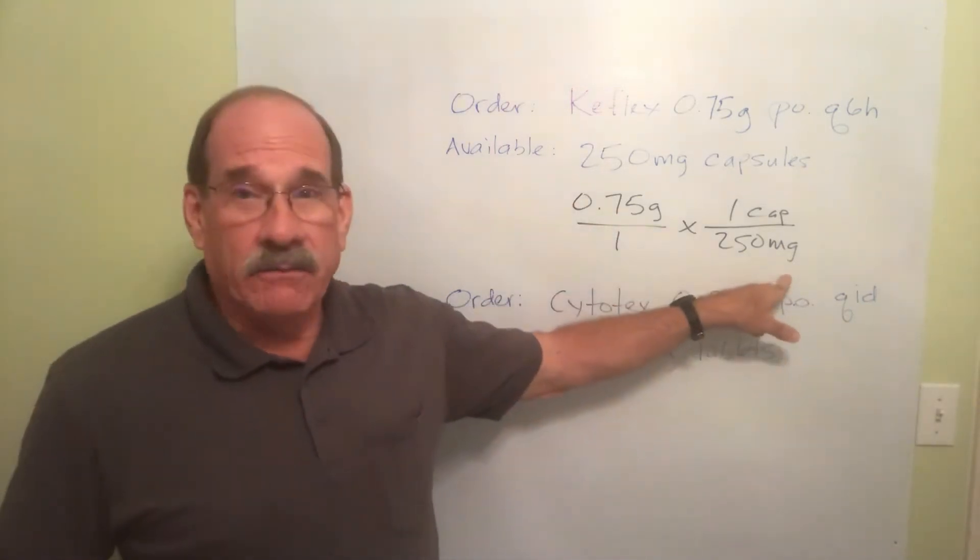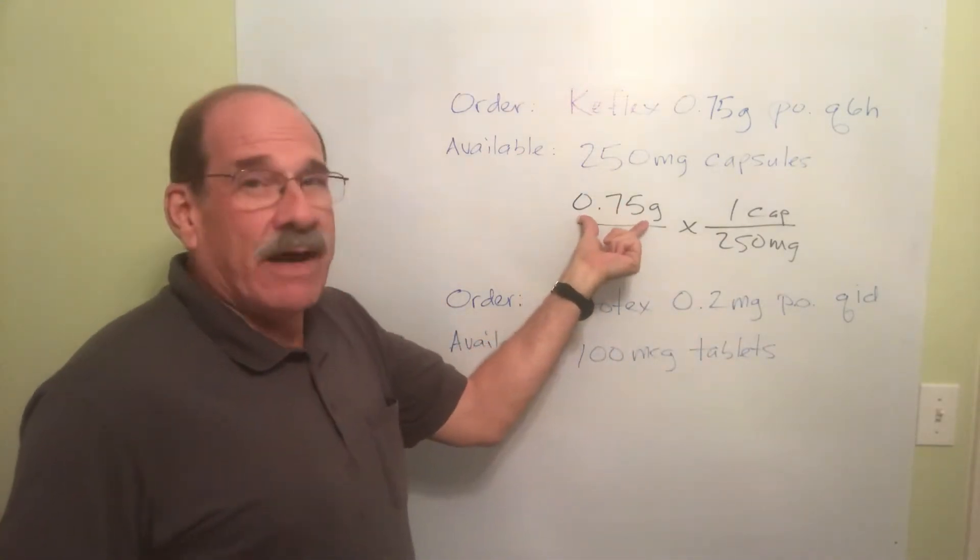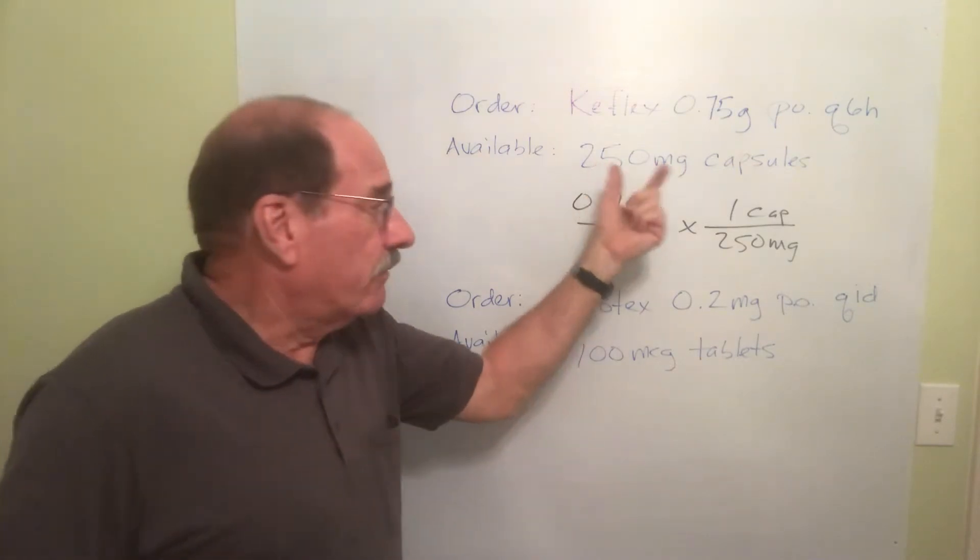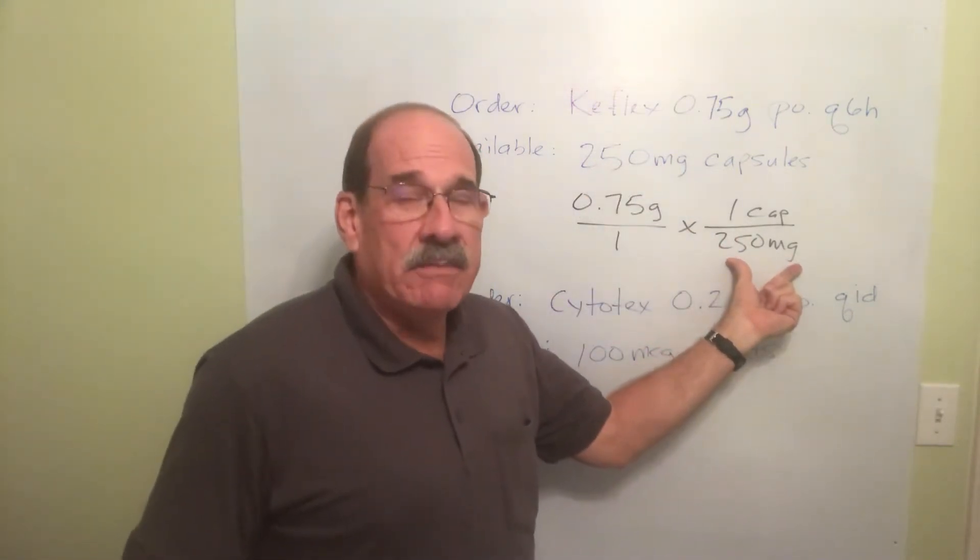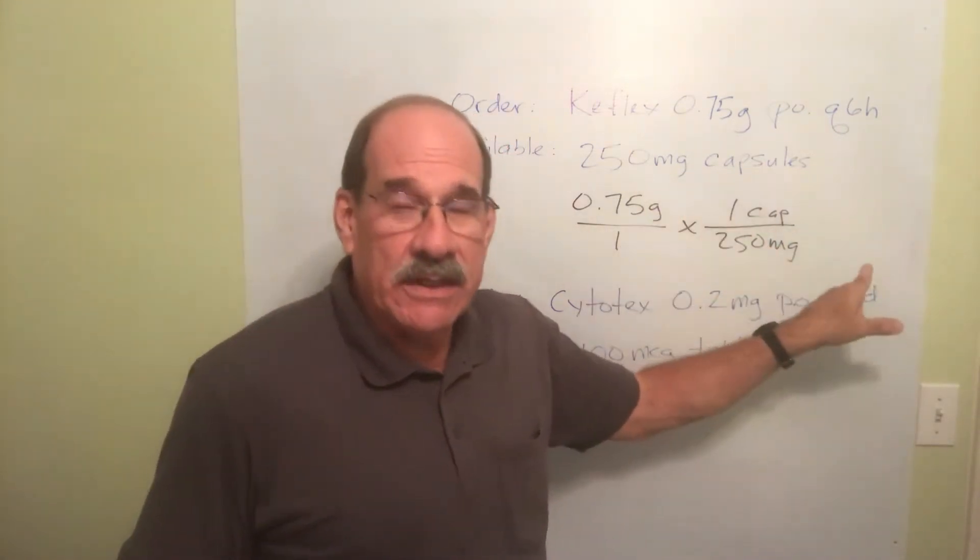In this case, you must convert one of these into the other form or vice versa. I've either got to convert 0.75 grams into how many milligrams that is, or I've got to convert 250 milligrams into grams. I've got to make this the same thing as this, or make this the same thing as this.